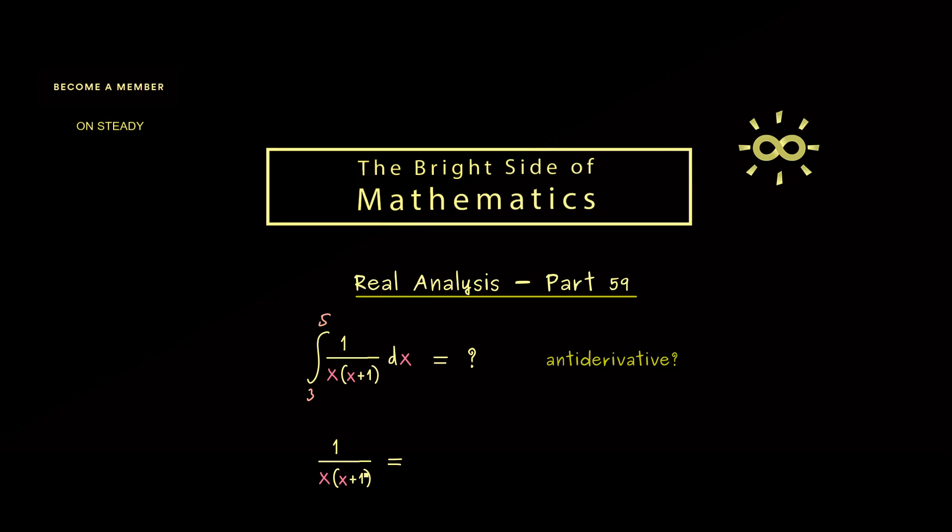The problem for us is that the denominator looks too complicated to immediately see the antiderivative. However, what we immediately see is that we can rewrite this with two fractions. So we have 1 divided by x minus 1 divided by x plus 1.